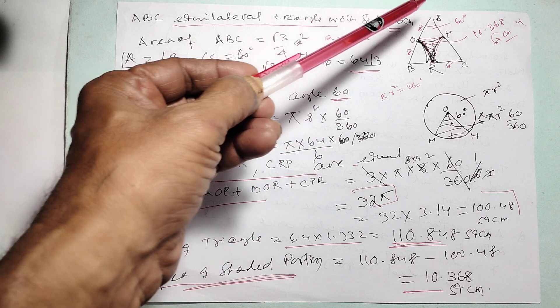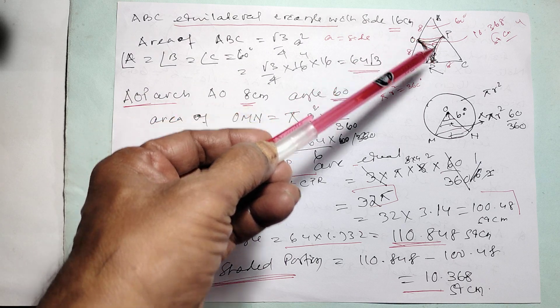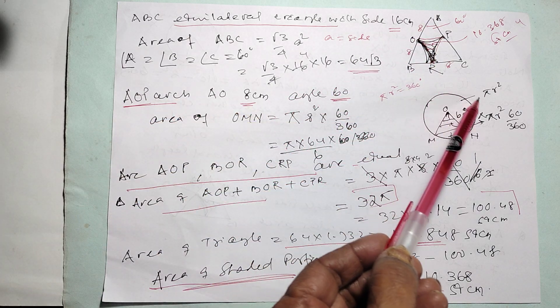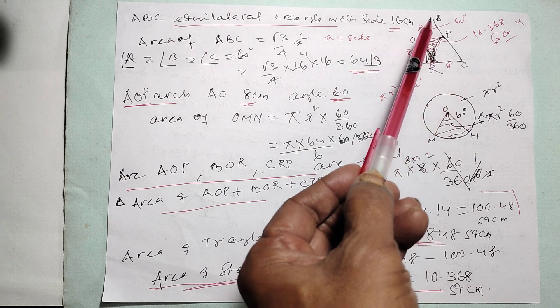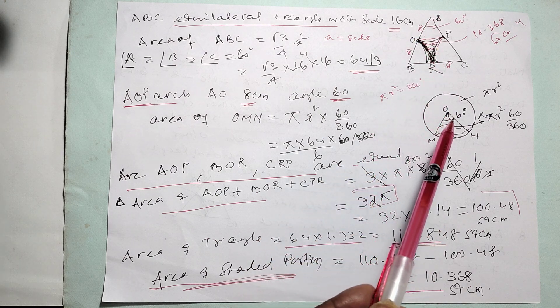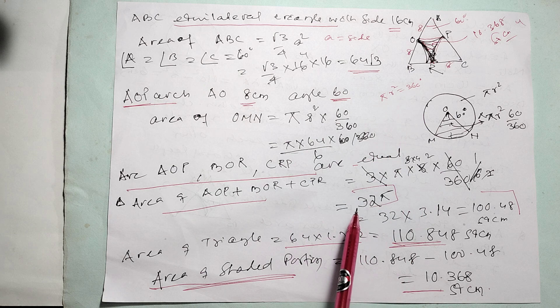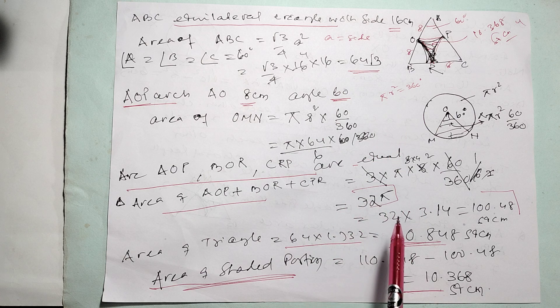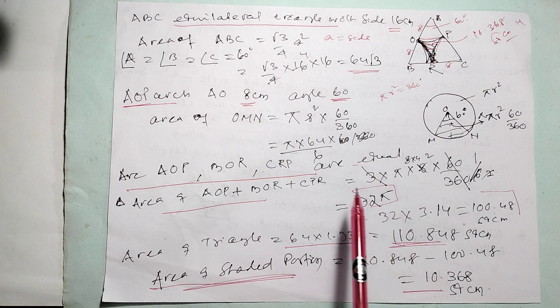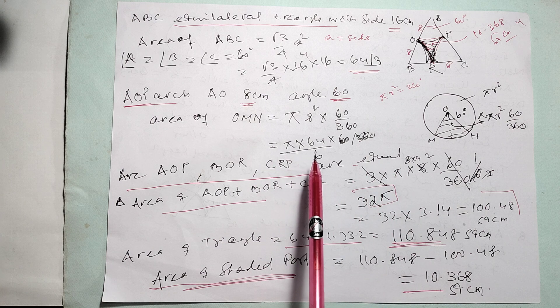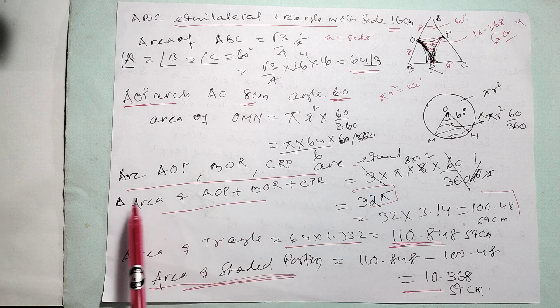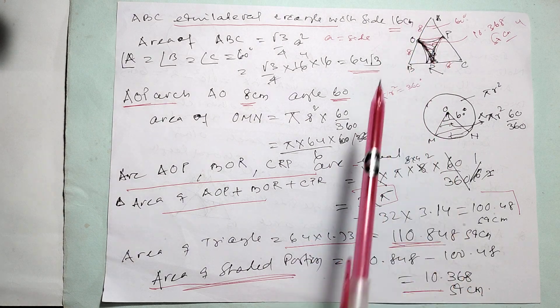This arc, he is telling the radius is 8 centimeter. What is the arc? This area is pi r square by 360. This is equal to 60 degree. So, what is the area will come? 60 by 360 into pi r square. Each area is coming pi by 64 divided by 6. There is 3 arcs in there. So, it is multiplied by 3.